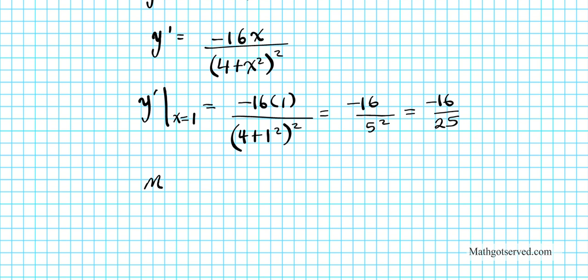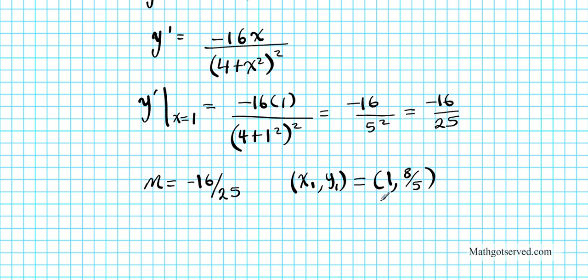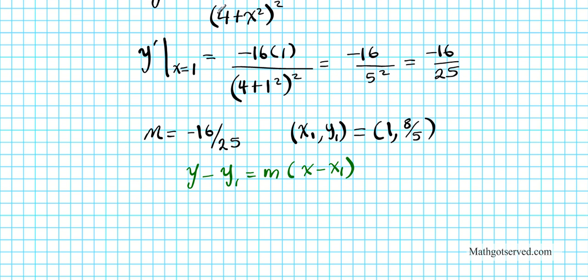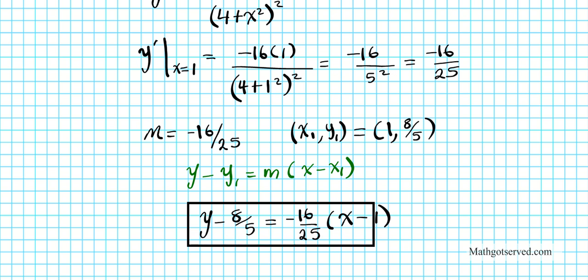We've found the slope m equals negative 16 over 25. Earlier we determined the point (x1, y1) is (1, 8/5). Now we plug both pieces into the point-slope formula. We have: y minus 8/5 equals negative 16/25 times (x minus 1). This is the equation of the tangent line to the Witch of Agnesi curve at x equals 1.